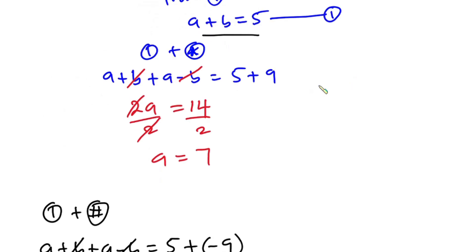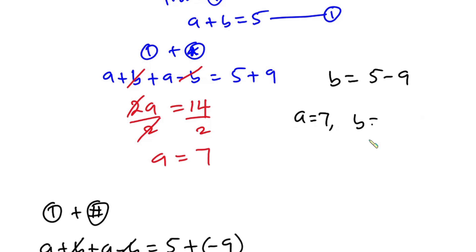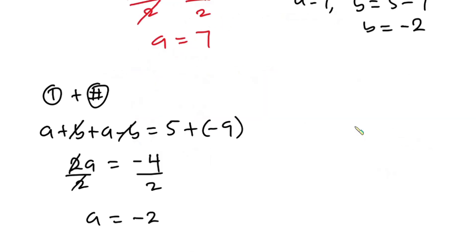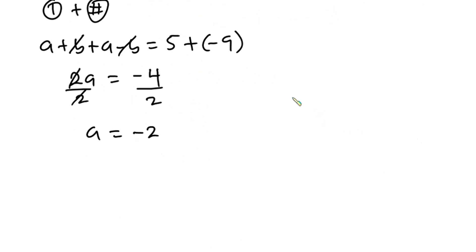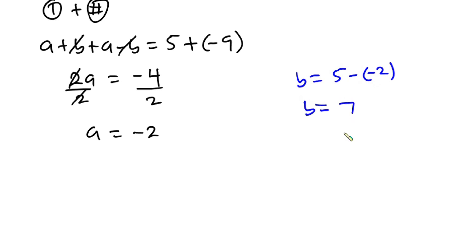From equation 1, making b the subject: b equals 5 minus a. When a equals 7, b equals 5 minus 7, so b equals negative 2. When a equals negative 2, b equals 5 minus negative 2, so b equals positive 7.